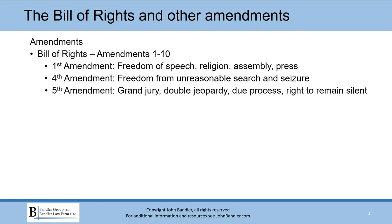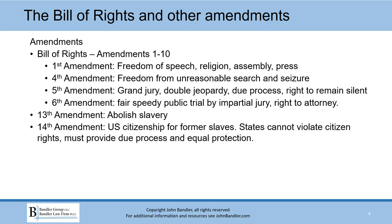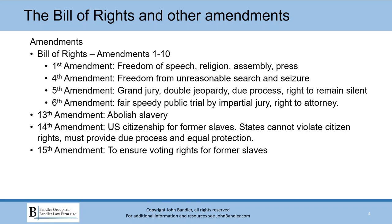The Fifth Amendment provides for a right to grand jury, double jeopardy protections, due process, the right to remain silent — that we now know as the Miranda warnings. The Sixth Amendment provides for a fair, speedy, public trial by an impartial jury, and guarantees a criminal defendant a right to an attorney. The Thirteenth Amendment abolished slavery. The Fourteenth Amendment guaranteed U.S. citizenship to former slaves and said that states cannot violate a citizen's rights, must provide due process and equal protection. The Fifteenth Amendment guaranteed voting rights for former slaves.